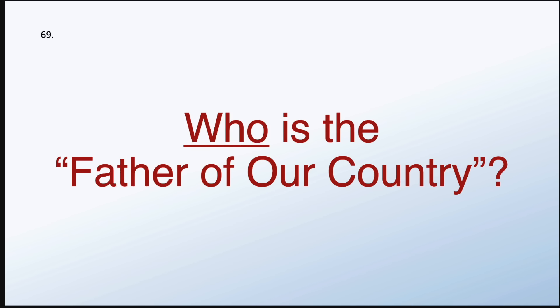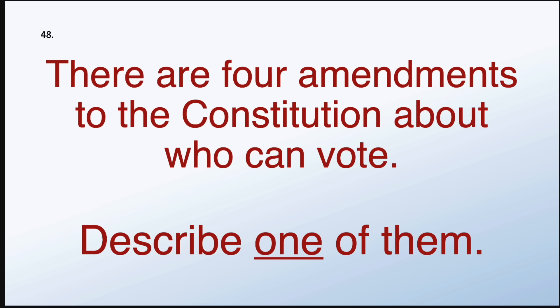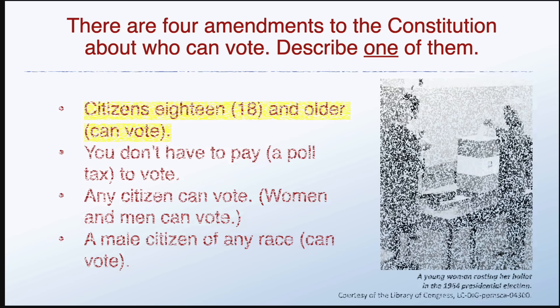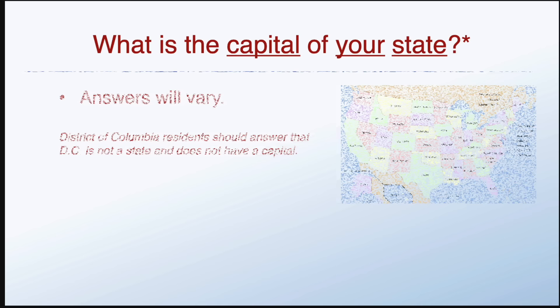Who is the father of our country? There are four amendments to the Constitution about who can vote. Describe one of them. Citizens 18 and older can vote. What is the capital of your state? When is the last day you can send in federal income tax forms? April 15th.